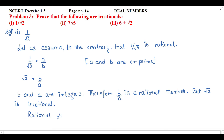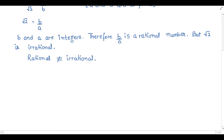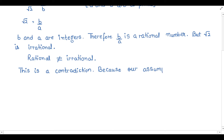But rational cannot be equal to an irrational. So here we have a contradiction. Because our assumption is incorrect — we assumed that 1 by under root 2 is a rational number, but that assumption is wrong. Hence, 1 by under root 2 is irrational.